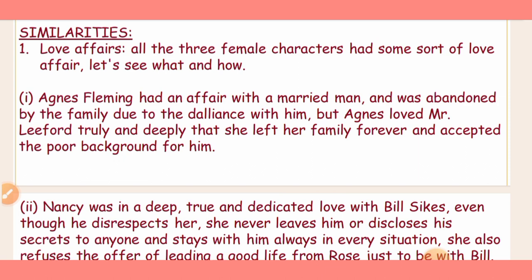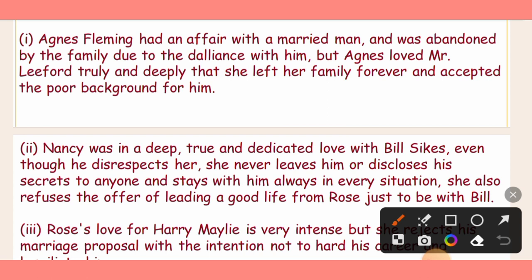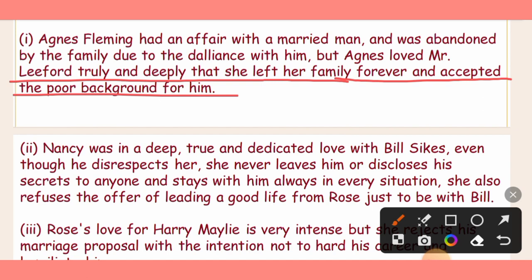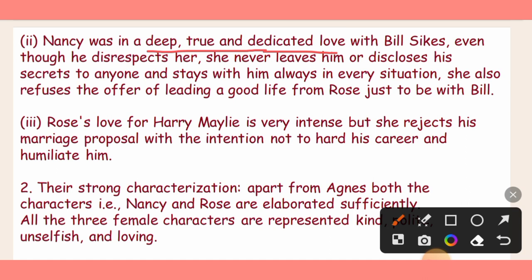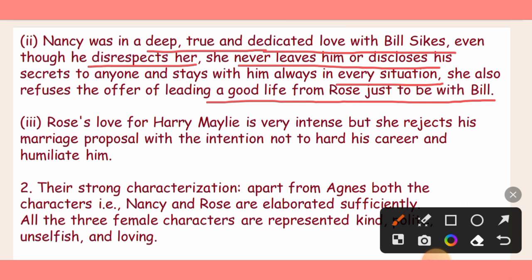Comparing the three characters: Agnes was a married man's affair partner, her family abandoned her because of her background, and she loved her family truly and deeply, but died in poverty. The second character, Nancy, had a very deep and true love — she was very dedicated to Bill Sykes. Even though Bill Sykes always disrespected and mistreated her, she always stayed with him. When Rose and Brown offered Nancy a better life, recognizing she could be a good lady, she refused and chose to stay with Bill Sykes.